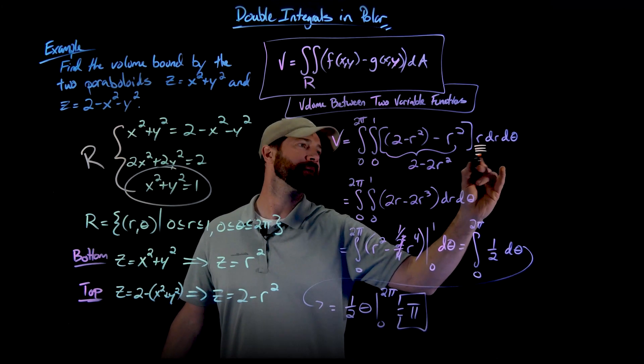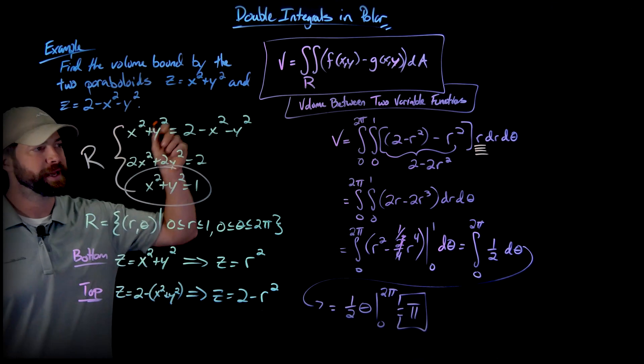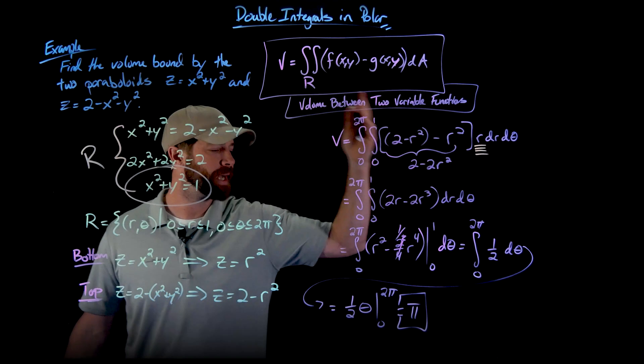Again, always important to emphasize this. It's the one thing you always just see missed. That factor of r, then dr and d theta. Make sure you're distributing that through.